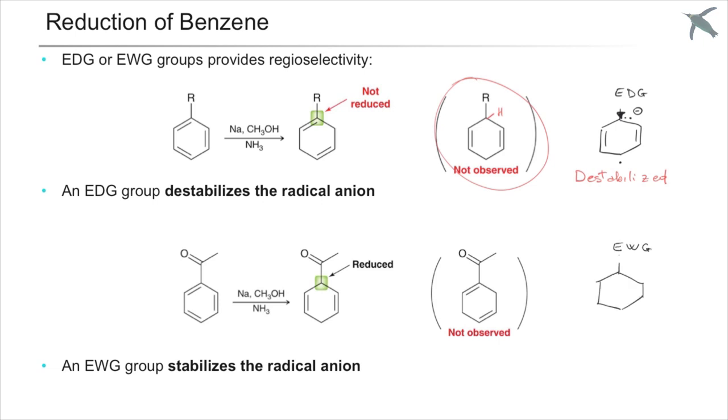Electron-withdrawing groups, on the other hand, remove electron density from the ring, stabilizing the radical anion, so the carbon bearing the substituent gets hydrogenated.